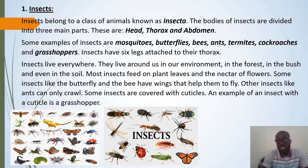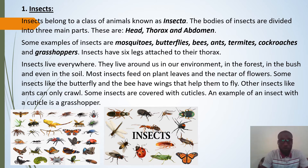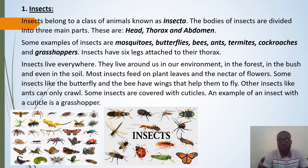Some examples of insects are mosquitoes, butterflies, bees, ants, termites, cockroaches, and grasshoppers. Insects have six legs attached to their thorax. Insects live everywhere in our environment — they can be found in forests, bushes, and even in the soil. Most insects feed on plant leaves and the nectar of flowers.